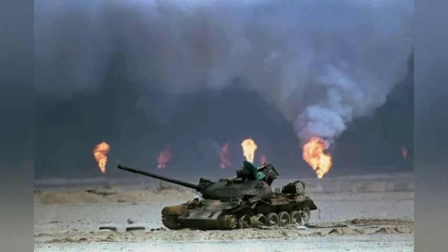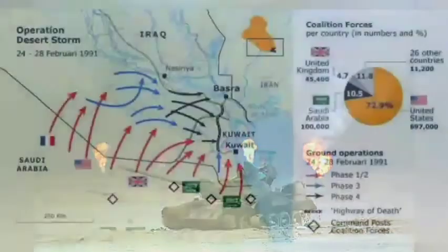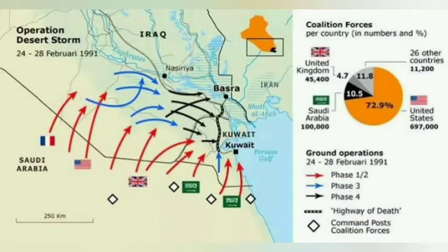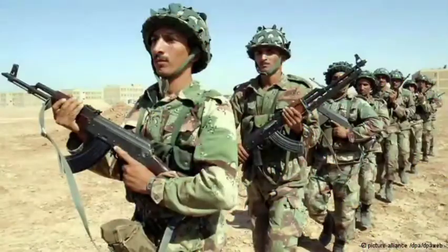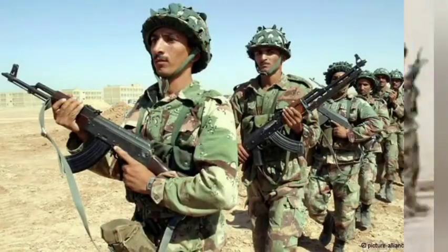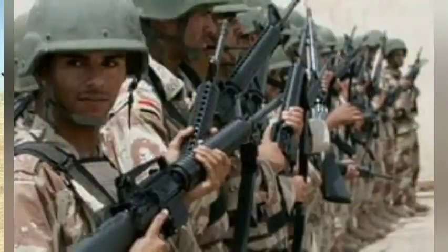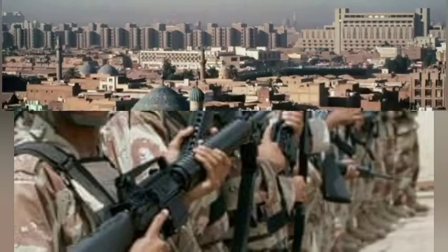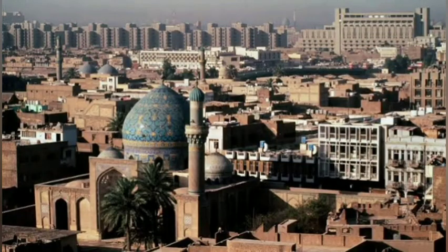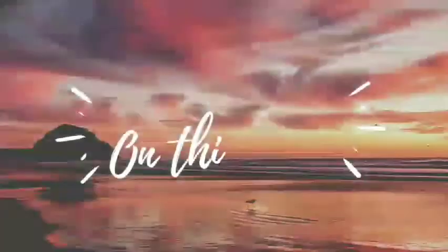Operation Desert Sabre, the coalition ground offensive, began on February 24, 1991. The Allied army engaged and destroyed Iraq's armored reserves, including Saddam's elite Republican Guard divisions near Basra. The remaining Iraqi forces in Kuwait collapsed and fled, suffering heavy casualties and forcing Saddam to accept a ceasefire on February 28th.